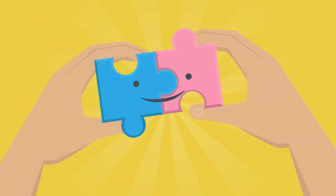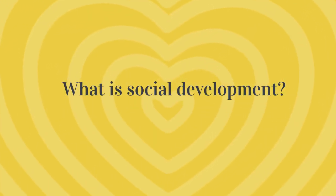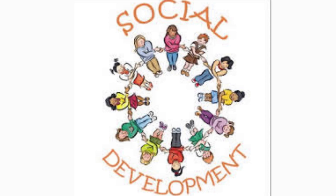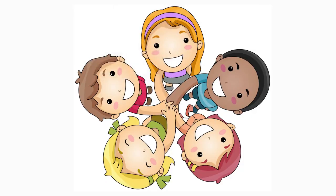What is social development? Social development refers to the process by which a child learns to interact with others around them. As they develop and perceive their own individuality within their community, they also gain skills to communicate with other people and process their actions.